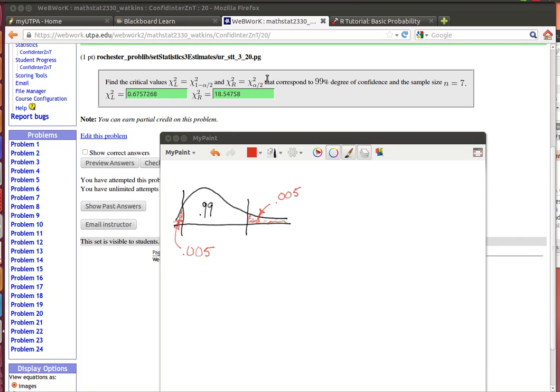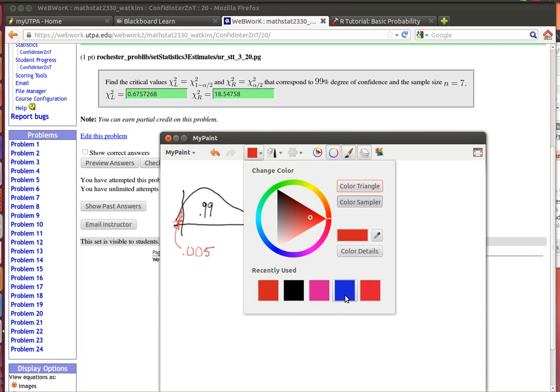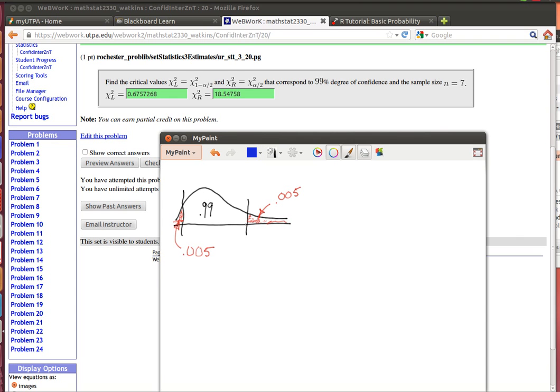What we're supposed to do is find the 99% degree of confidence with a sample size of n. So here's what we're going to do. We're going to look at that distribution. We want to have 99% between this value and this value. So we've got these two values here that we're looking for. That'll be the chi-squared upper and this will be the chi-squared lower.